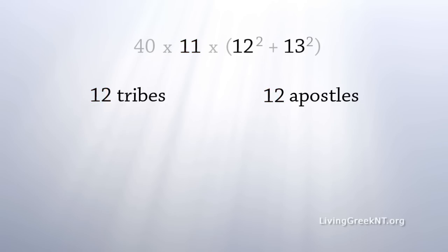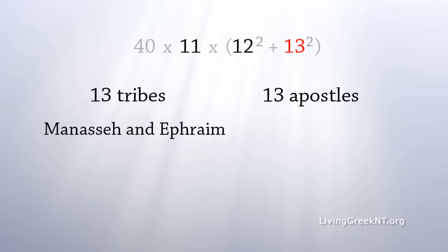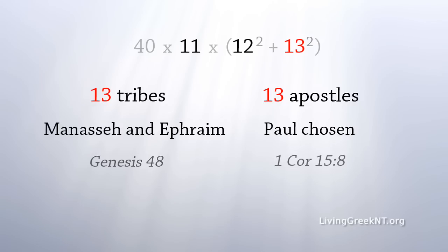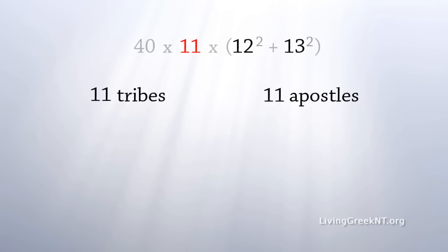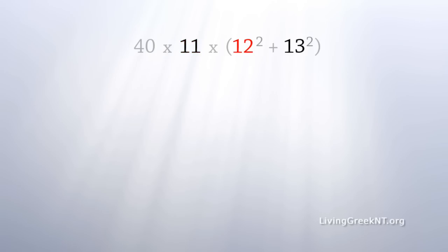Yet by another count, 12 did become 13 — when the two sons of Joseph, Manasseh and Ephraim, were brought to the fore, and each was to be treated as a full son of Jacob. In the New Testament, 12 became 13 when the Lord chose Paul to be an apostle — as one abnormally born, he said. So the sequence is: 11, briefly, then 12 tribes and 12 apostles, then later 13 tribes and 13 apostles — 11, 12, 13.